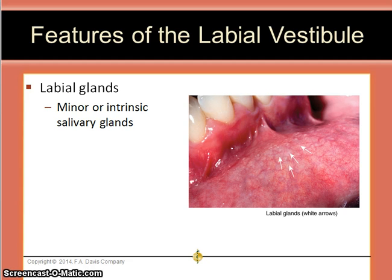Salivary glands in mammals are exocrine glands with ducts that produce saliva. They also secrete amylase, an enzyme that breaks down starch into maltose. Minor salivary glands within the mouth produce a minor amount of saliva, used to keep the mucosa moist.